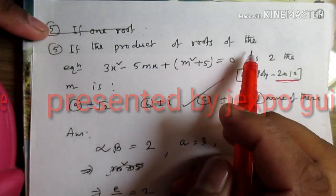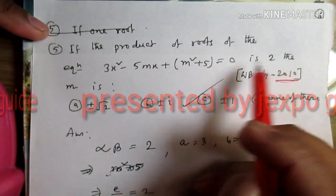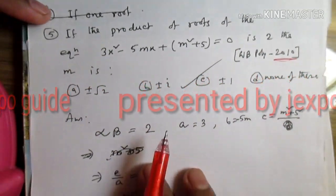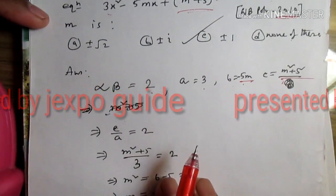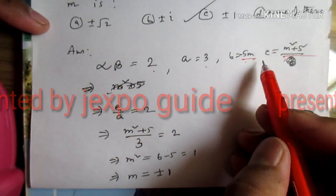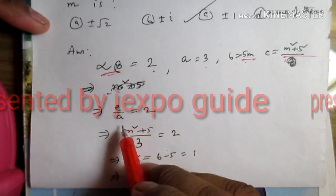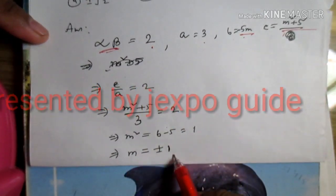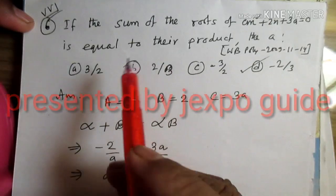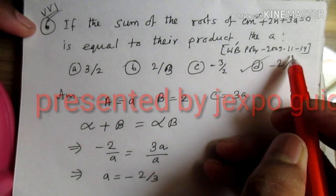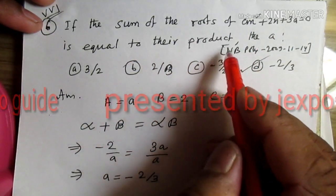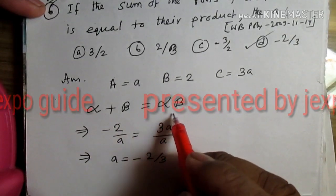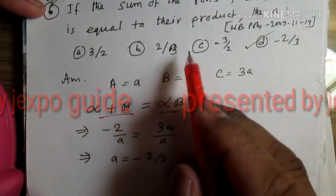If the value of the root of the equation is 2, then find the value of m. We can identify a, b, and c from the equation.